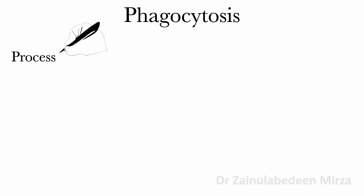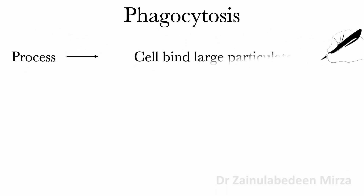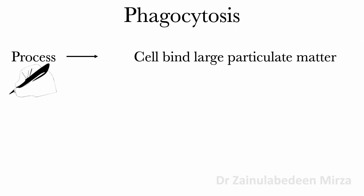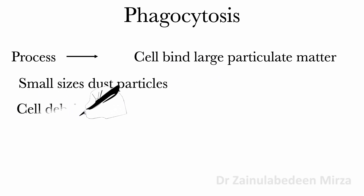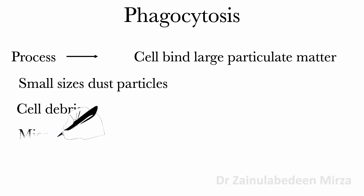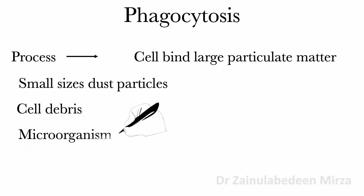Phagocytosis is another process by which cells bind and internalize large particulate matter such as small dust particles, cell debris, microorganisms, and apoptotic cells.